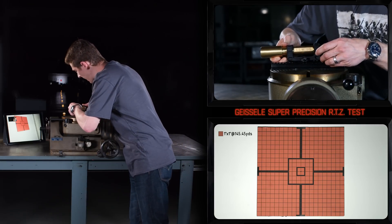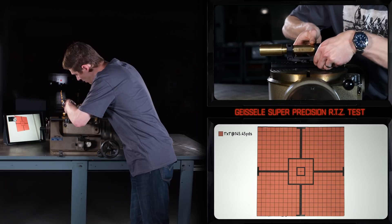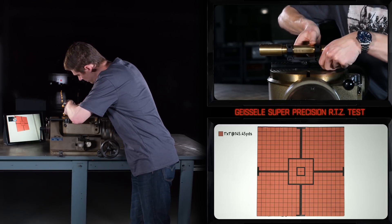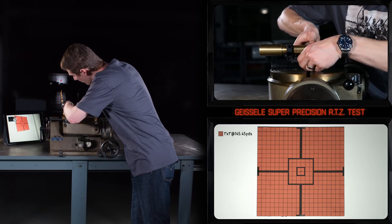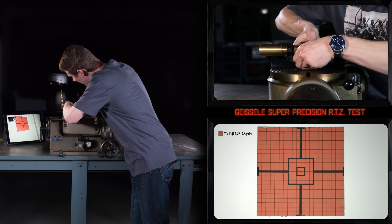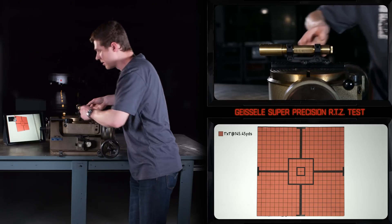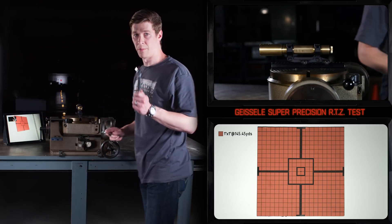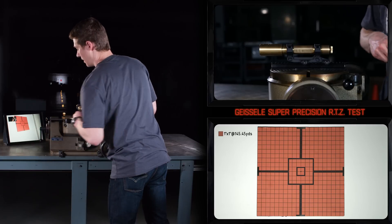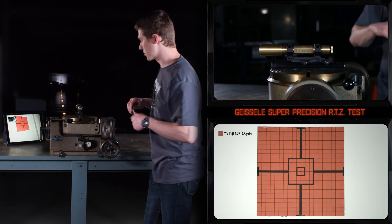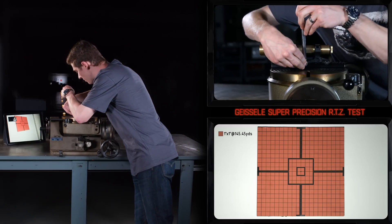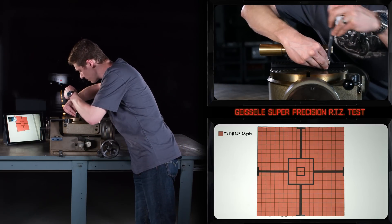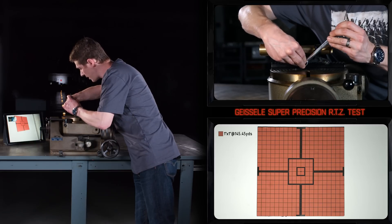We're going to attach the optic mount to our test fixture. I could use a torque wrench, but it's not necessary. I'm going to use a half-inch box end wrench.